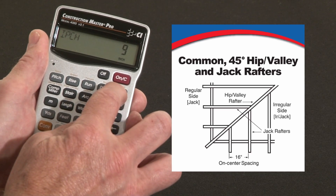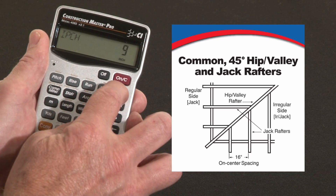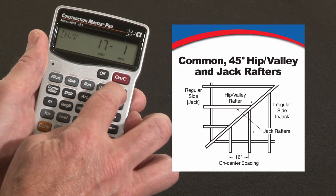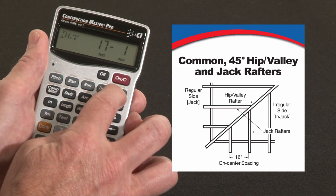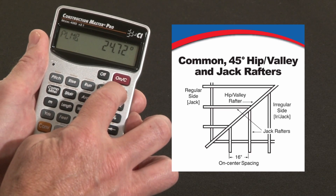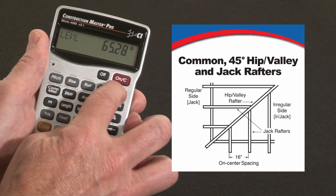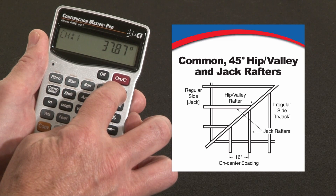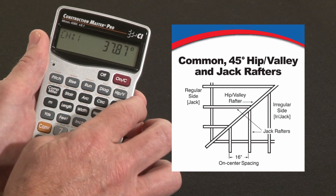Now I can hit the hip and valley key, and it gives me the irregular hip and valley length: 17 foot 1. It'll give me the cut angles as well. Of course it's not going to be 45 degrees — the cheek cut is 37.87 degrees.